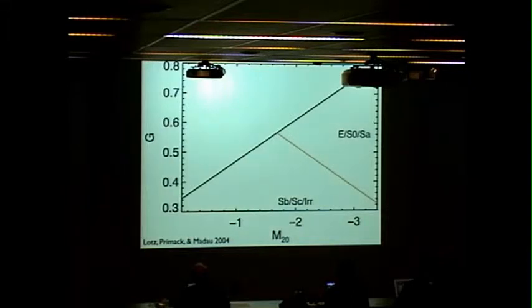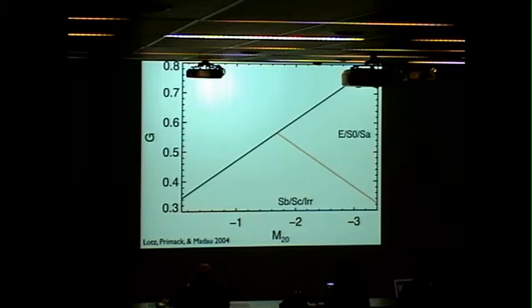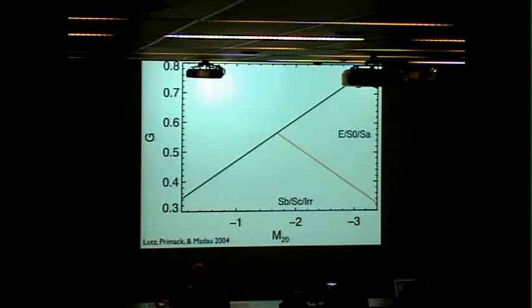Once we have these images created, we can start to measure the structural parameters or morphologies. I'm going to focus on the Gini-M20 diagram. The y-axis is the Gini coefficient, which measures the inequality among a galaxy's flux values in their pixels. Compact galaxies or galaxies with very bright cores will have a high Gini value, while smooth galaxies with a constant flux value will have low Gini values.